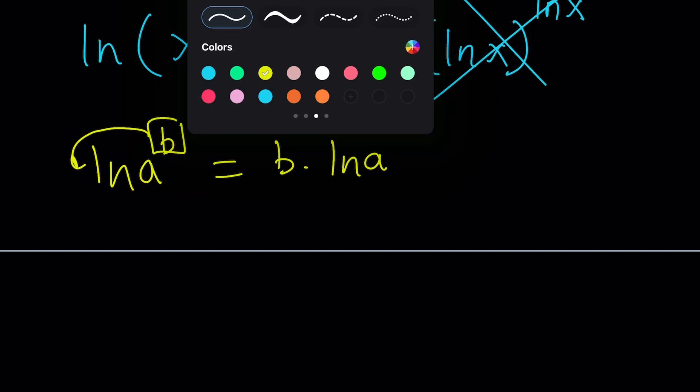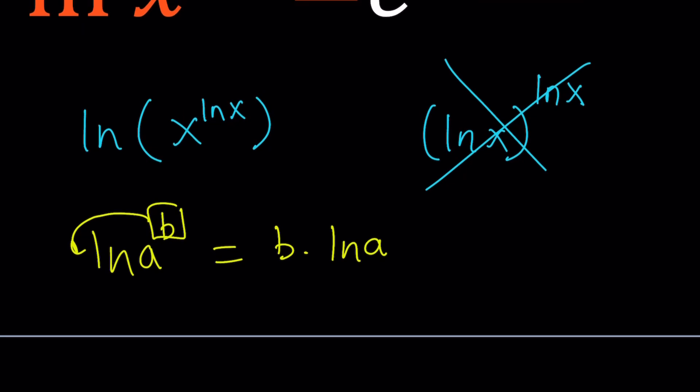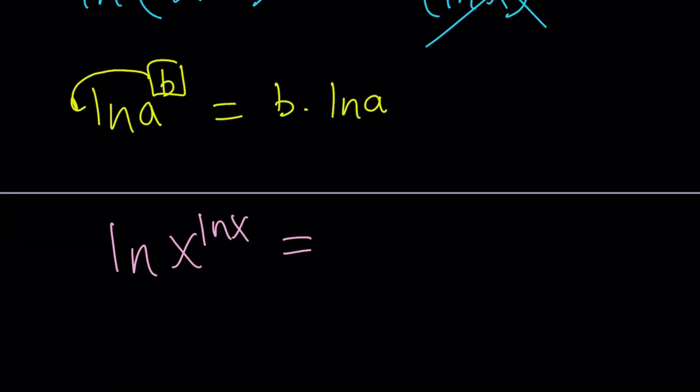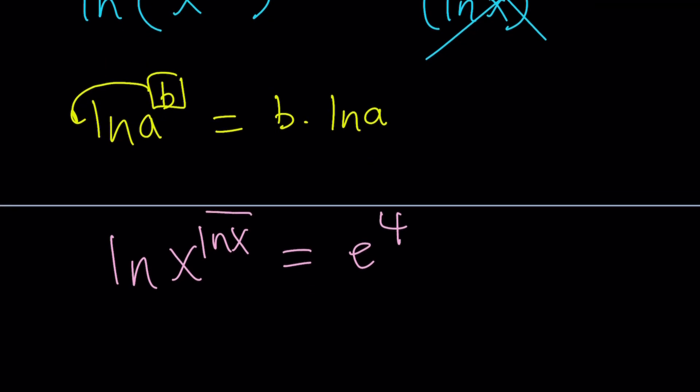Now, we do need to bring this down. So that's the rule. Let's go ahead and do it here. ln x to the ln x. Let's write it without the parentheses now because it looks better. ln x is e to the fourth power. Now, if I bring this to the front, that's going to become ln x times ln x, and of course, that's going to equal e to the fourth.